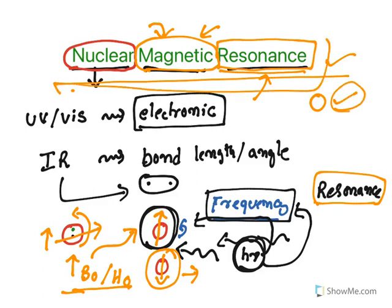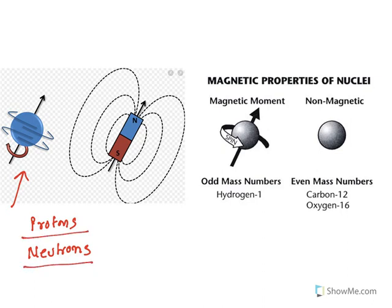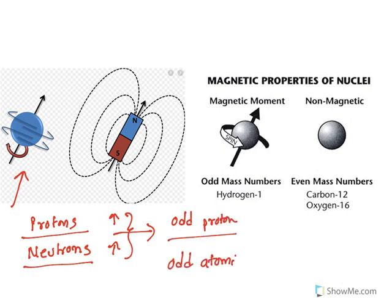Certain nuclei will spin — not all. In order for a nucleus to spin, it needs to have an odd number of protons or an odd atomic mass. If proton number and neutron number are equal, the spins cancel out. An odd number of protons means one proton is in excess, giving the nucleus a net spin. An odd atomic mass means the proton and neutron numbers are unequal, so a spin results.